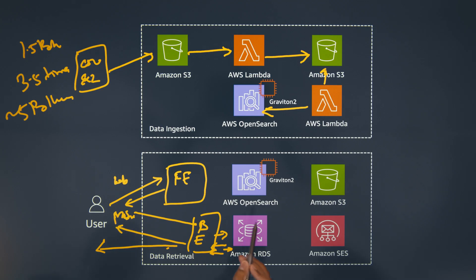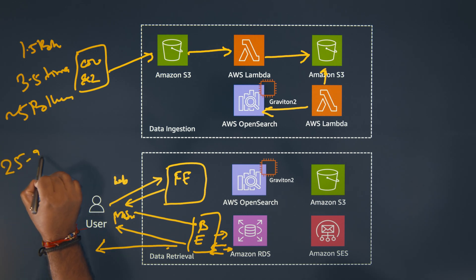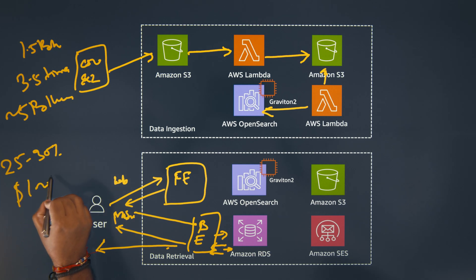You mentioned 5 billion records. How do you keep the cost down for that kind of volume? We are using the Graviton2 instance for Amazon OpenSearch, which helped us really optimize cost. Comparing from the beginning, we are saving something between 25 to 30 percent of the operational cost, which is roughly equivalent to $100,000.